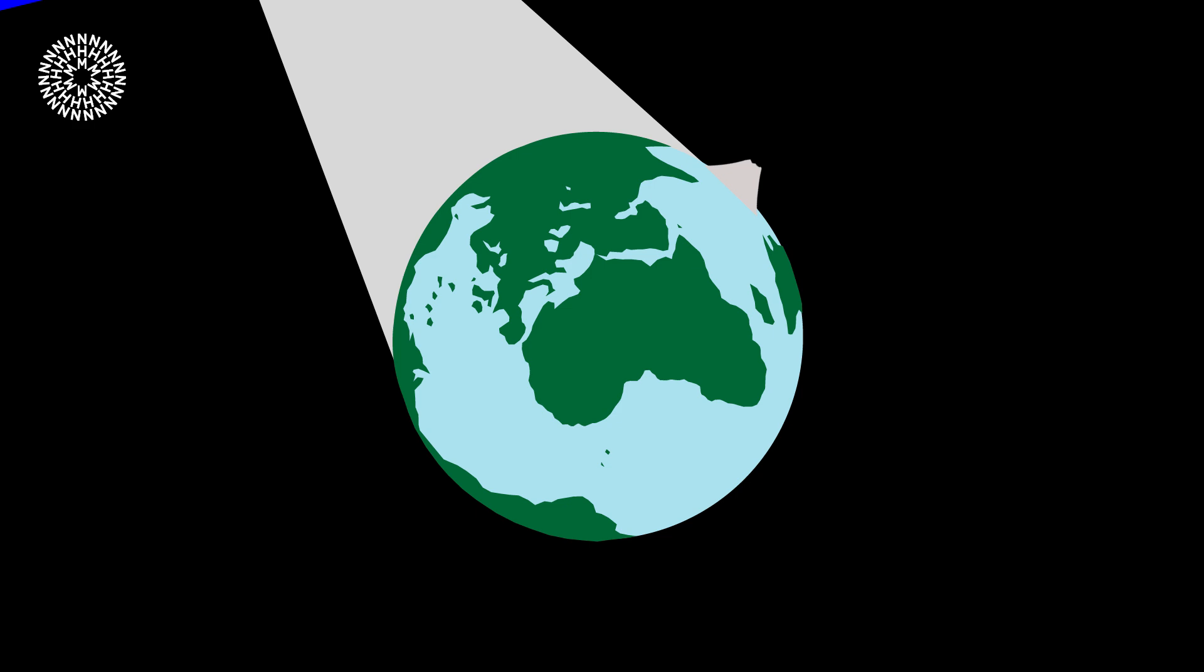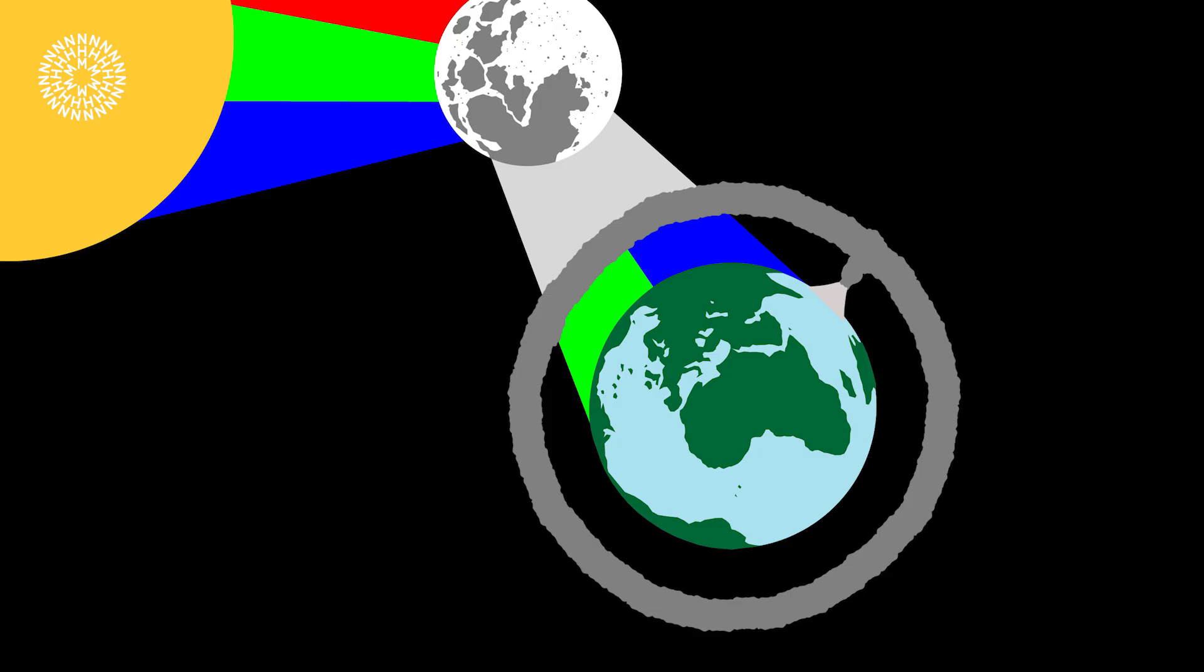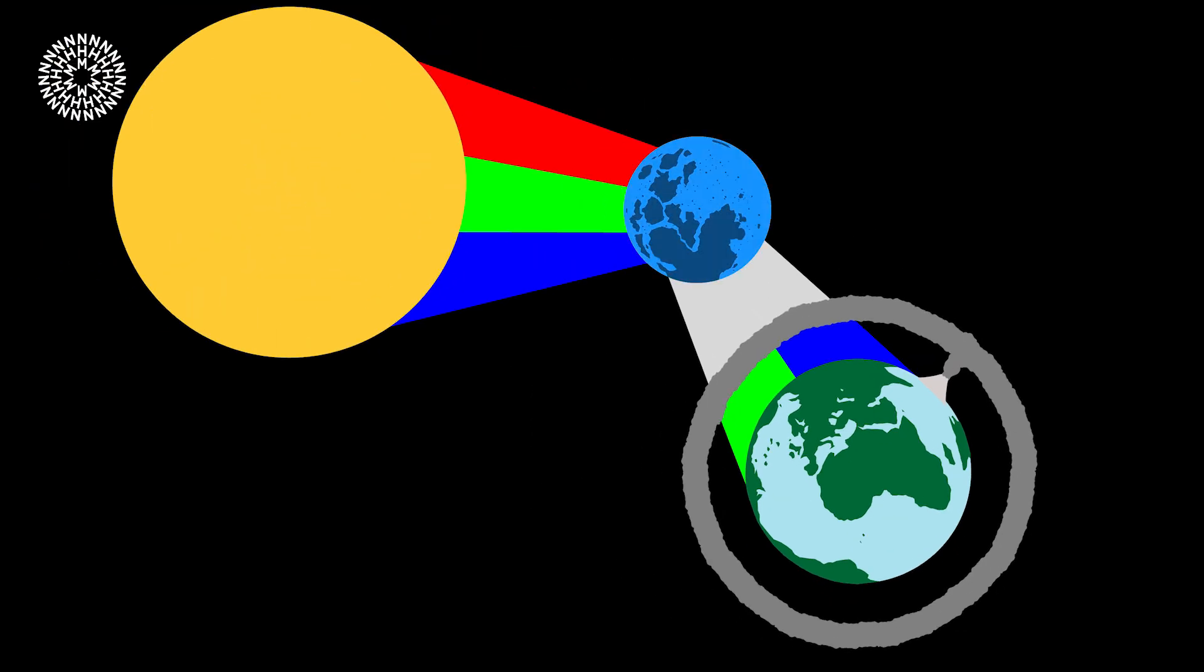That can sometimes happen after volcanic eruptions. For example, Krakatoa in 1883, the moon was blue for over a year. The ash from the volcano was just the right size to block the red light, and the moon appeared blue.